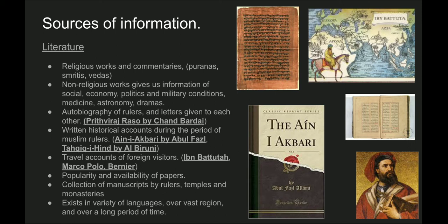Non-religious works gave us information about society, economy, politics, military conditions, medicines, astronomy, and drama. Autobiographies were written by others about the rulers during that time. For example, Prithviraj Raso was written by Chand Bardai and it was about Prithviraj Chauhan.